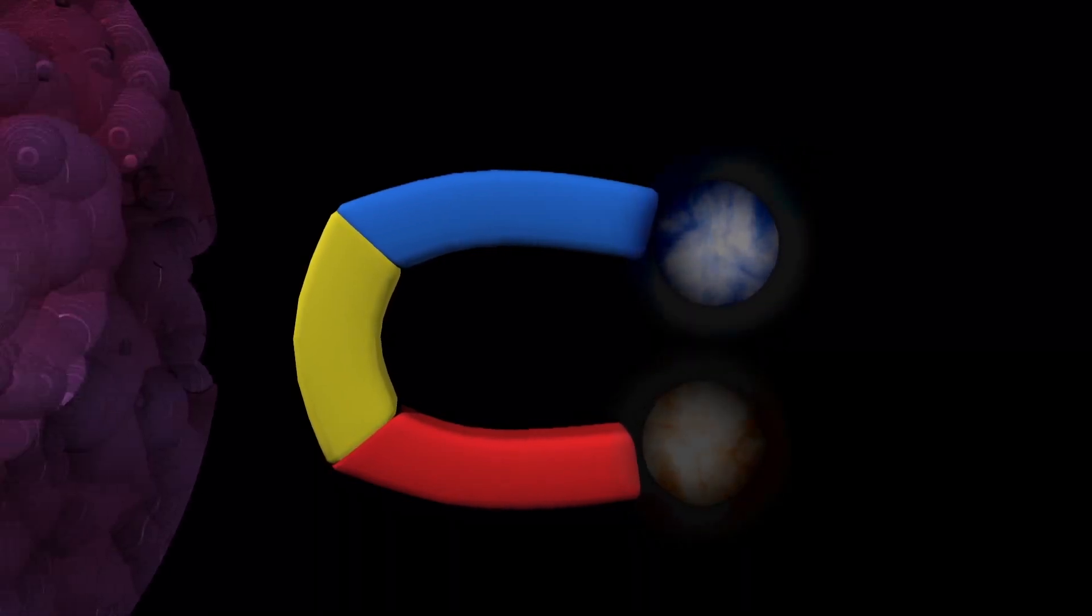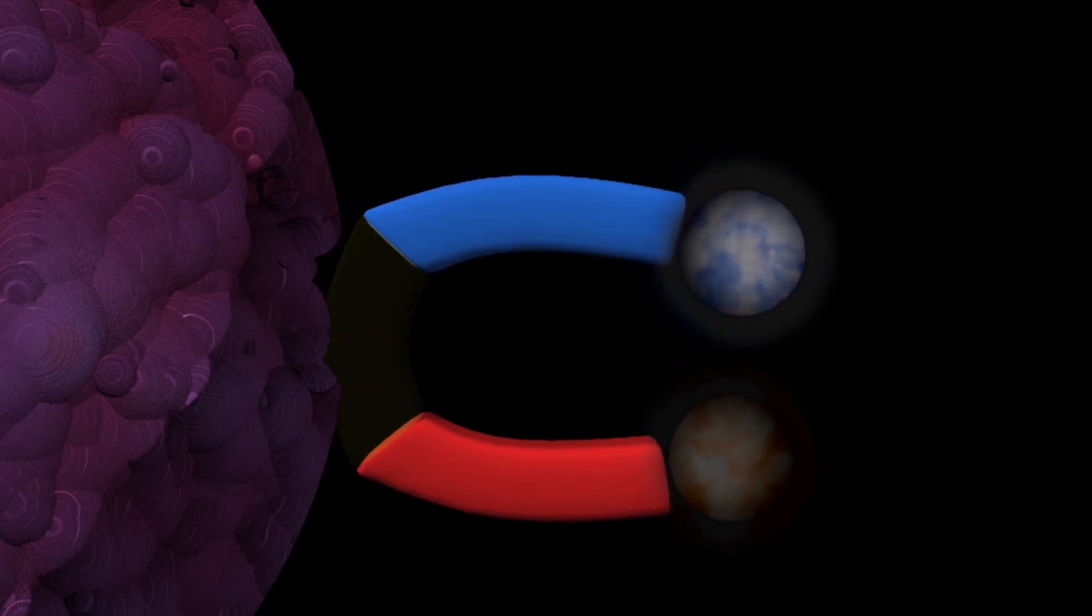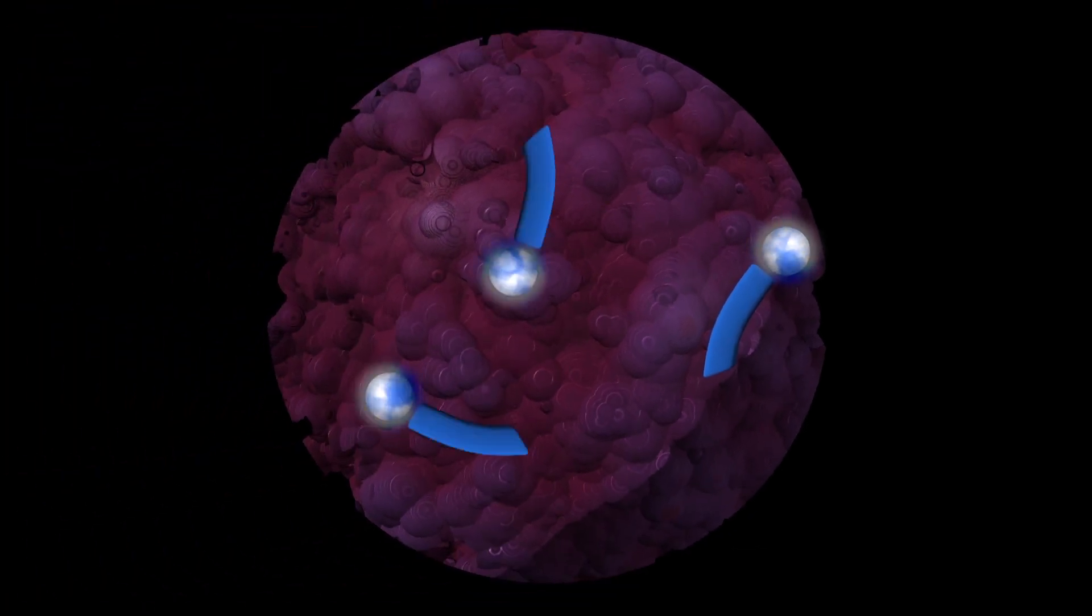When the molecule comes in contact with enzymes found specifically in tumors, the back of the molecule is cut, freeing the positive arm with its dye attached to enter the tumor cells.